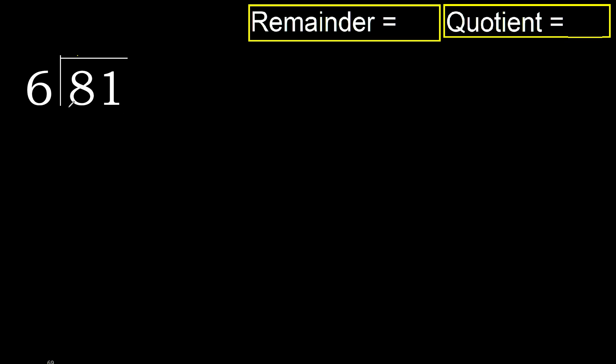81 divided by 6. 8 is not less, therefore with 8: 6 multiplied by which number is nearest but not greater? 6 multiplied by 2 is 12 — 12 is greater. 6 multiplied by 1 is 6 — is not greater. 8 minus 6 is 2. Next.